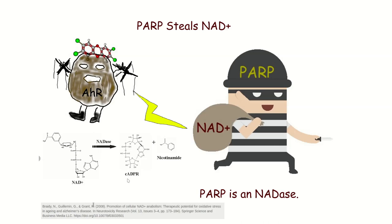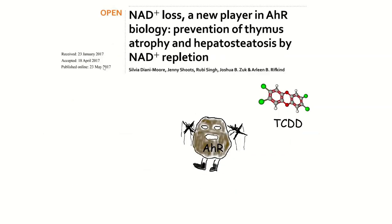PARP steals NAD+. It's actually called an NAD-ase. What it does is take NAD+ and split it into cyclic ADPR and nicotinamide. So PARP is literally breaking down the NAD+, and PARP activity is actually activated by the aryl hydrocarbon receptor. In the first episode of this series, I provided evidence that the aryl hydrocarbon receptor is actually increased in human obesity, and that might be the reason why PARP is increased.